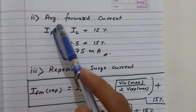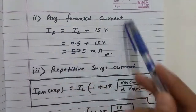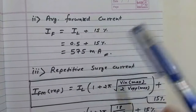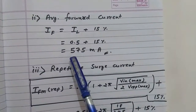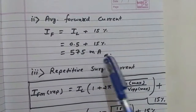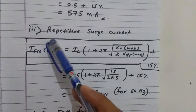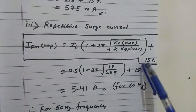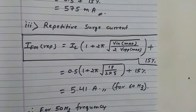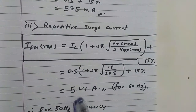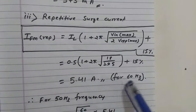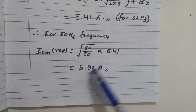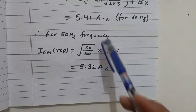The next parameter is average forward current: I_F(avg) = I_L + 15% margin = 575 mA. The third parameter is repetitive surge current. I_FM = 5.41 A at 60 Hz; adjusted for 50 Hz this becomes 5.92 A using the appropriate formula.